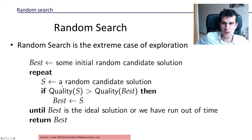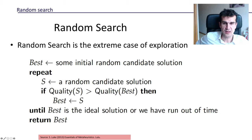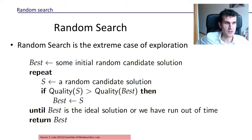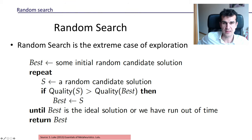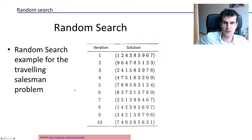How many times do we repeat this process? We can fix any stopping criterion we wish — maybe until the best solution satisfies some minimum quality, or we do this for a certain amount of time, or most commonly we do this for a fixed number of iterations. In the end we return the best solution found so far.